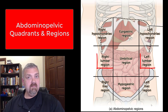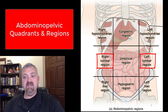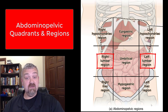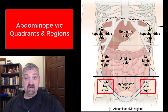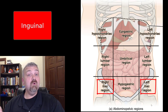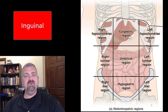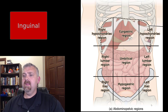Then we have left and right lumbar regions. Lumbar means loin — think lumbar spine, your low back. And then we have the left and right iliac region. You may also see this called the inguinal region — iliac and inguinal are both correct, it just depends on who's using the term.